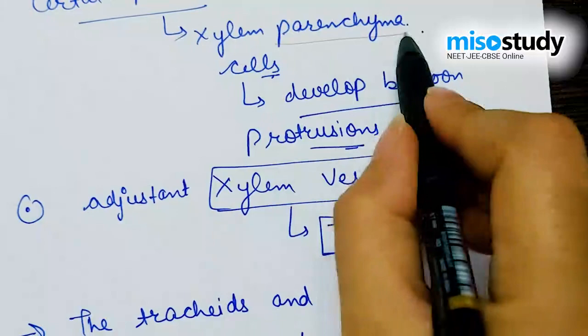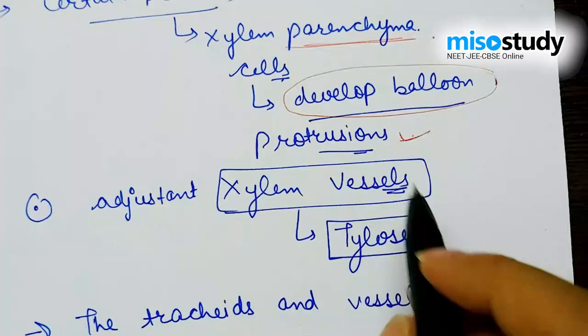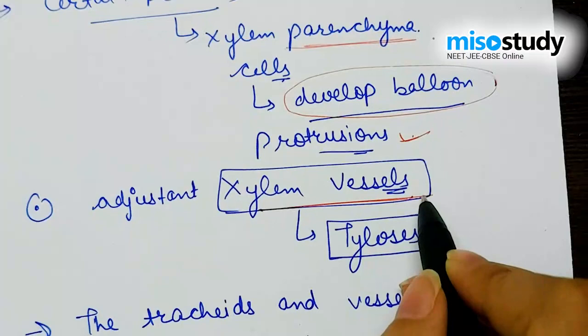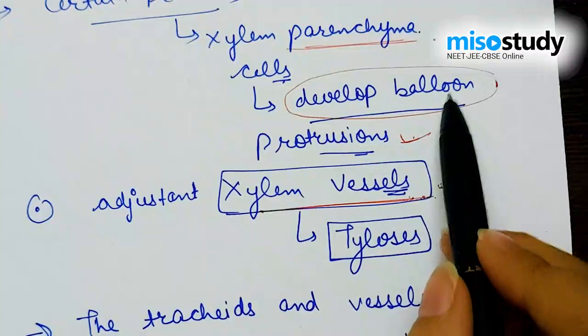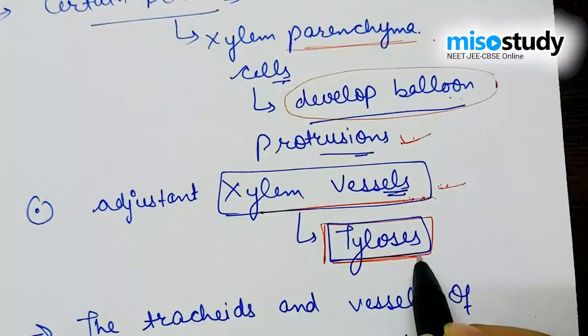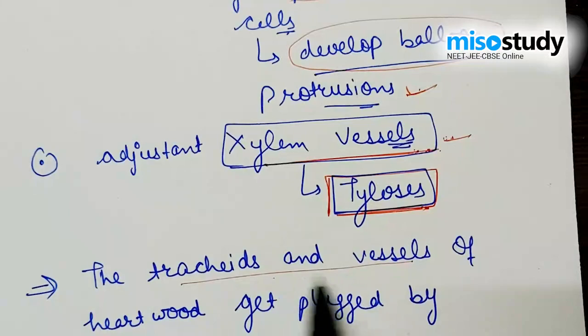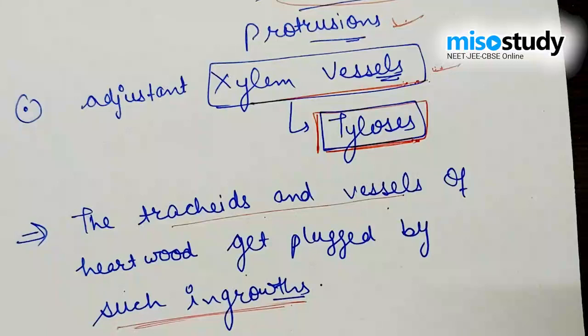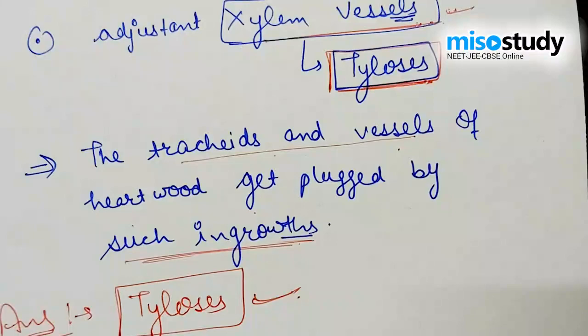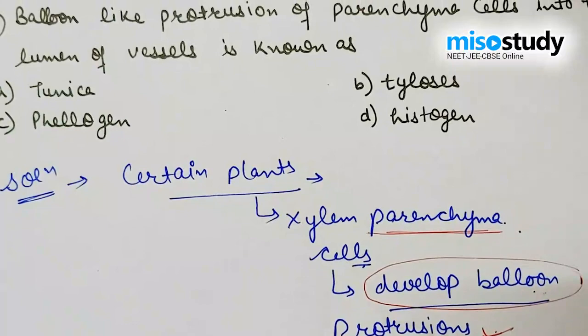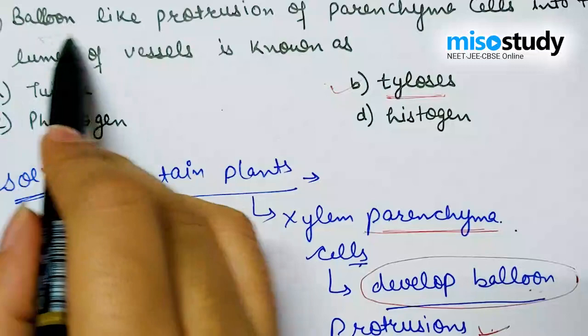When xylem parenchyma develops balloon-shaped protrusions into xylem vessels by the presence of tylosis, the tracheids and vessels of heartwood get plugged by such ingrowths. So the right answer is option B — tylosis.